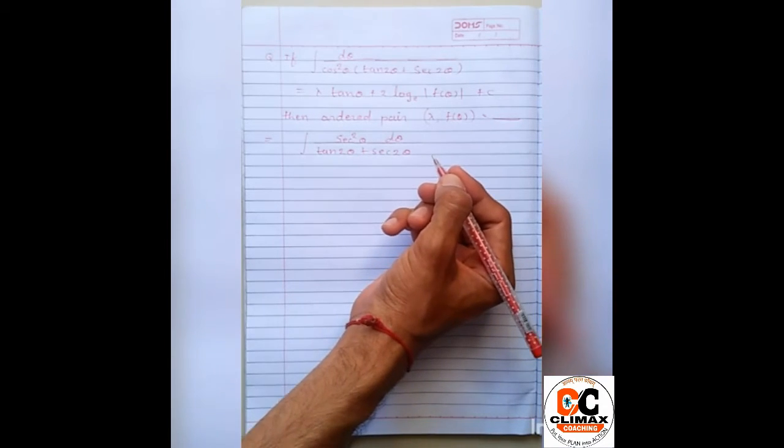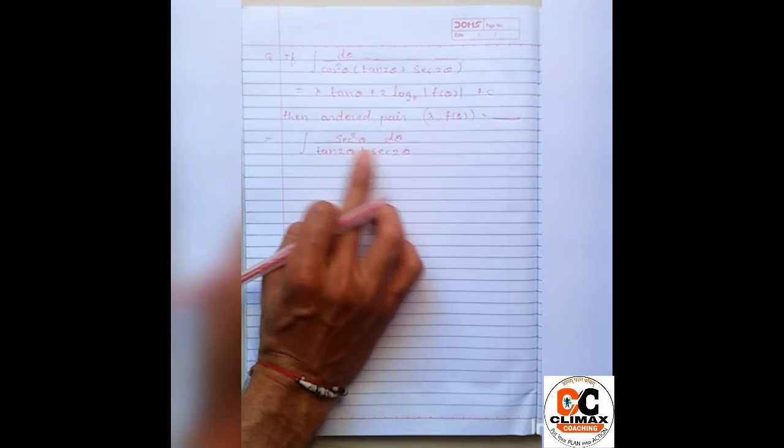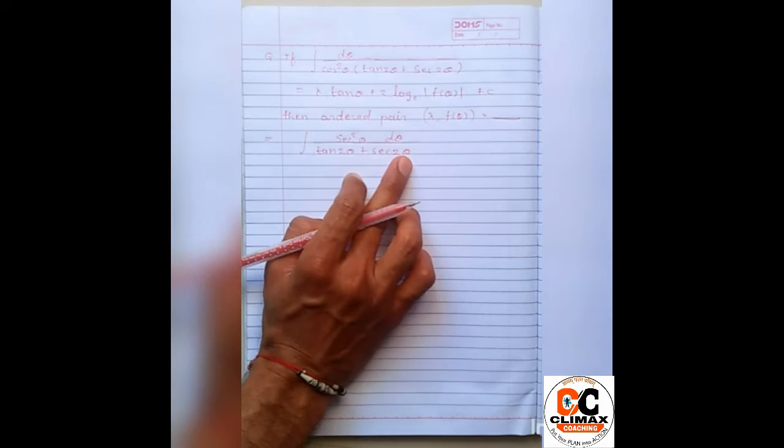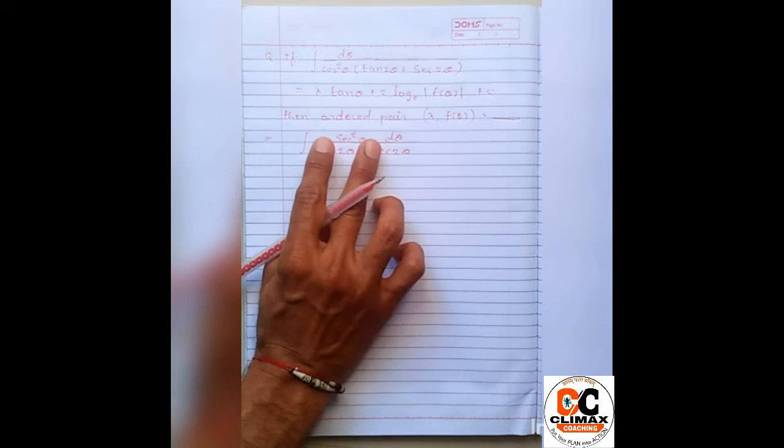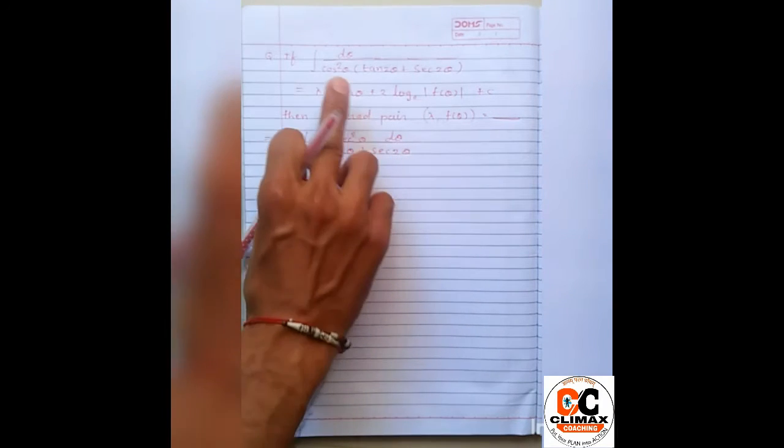First of all, we can understand that tan 2 theta. Sec 2 theta is how we can make tan. Then, if tan is equal to t, then the derivative is sec square. So, numerator and numerator are how we need to maintain 2 theta. That's why, the first step is sec square theta d theta.